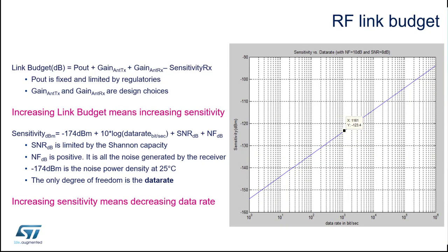Sensitivity is another equation, and in the end it comes down to only one variable. We have the signal-to-noise ratio and noise figure — for a particular operation between two nodes without changing position or environment, these are basically static. Then there is the noise power density at 25 degrees Celsius, and the last parameter is the logarithmic function of data rate. Data rate is the only variable in this equation. So to increase the sensitivity, we need to decrease the data rate, and decreasing the data rate means increasing the link budget.